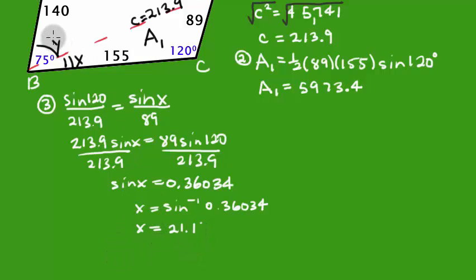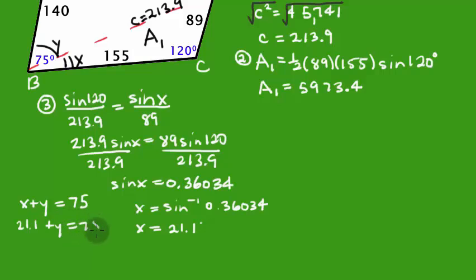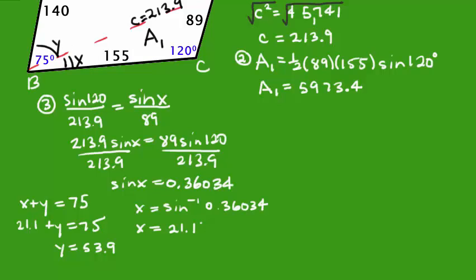Now we have to figure out what y is. Remember, x + y = 75 degrees. So if x is 21.1, I subtract 21.1 from both sides to get y = 53.9 degrees. That's the angle I was looking for — angle y right there. So once we get x, a little bit of math, and we now have y. I'm going to put that into the diagram: this angle is now 53.9 degrees.